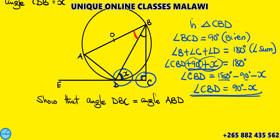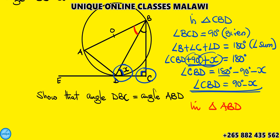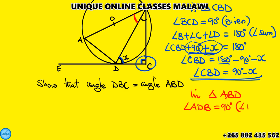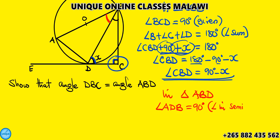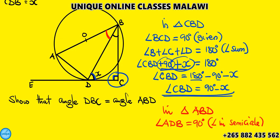Now we are going to work in triangle ABD. Since we are told that AOB is a diameter, then the angle ADB is equal to 90 degrees. This angle is in a semicircle. An angle in a semicircle equals 90 degrees.